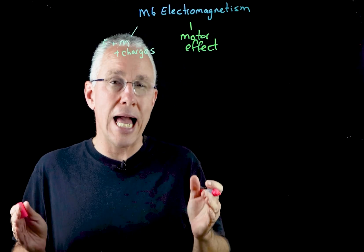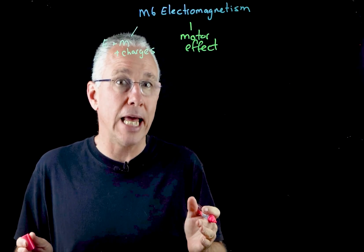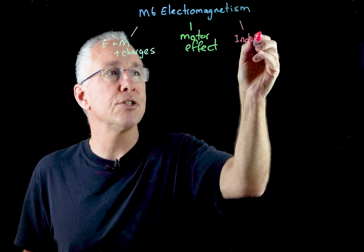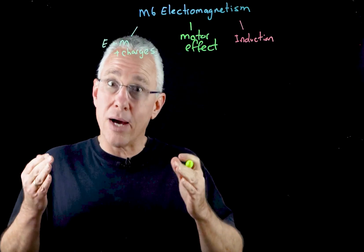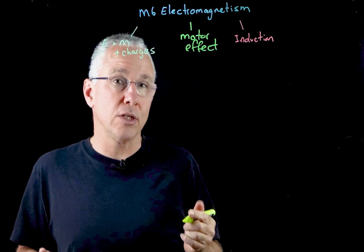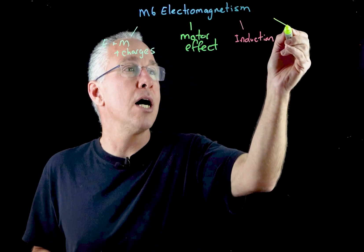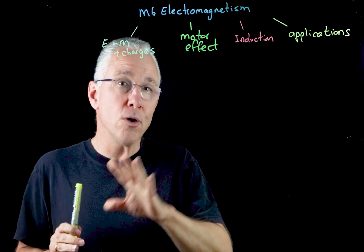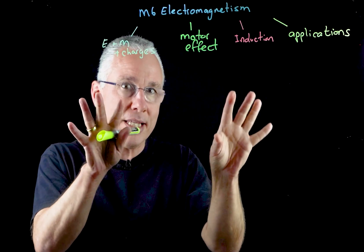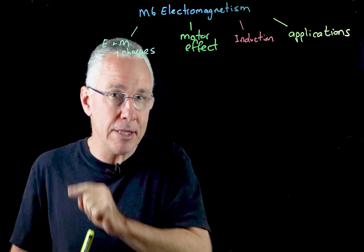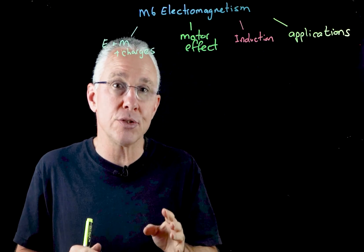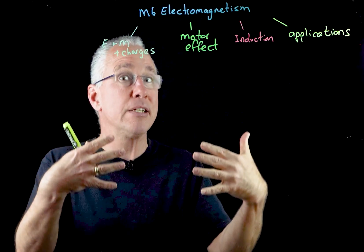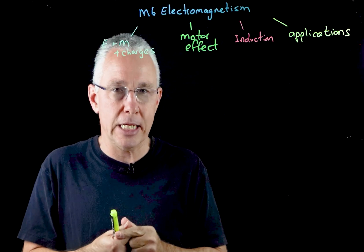The third inquiry question asks how electric and magnetic fields are related, and in essence what we look at is the concept of electromagnetic induction. The final question is how has knowledge of the motor effect been applied to technological advances — in essence, we're talking about applications. Those are our four key inquiry questions, simplified to save space, and everything we develop underneath each one relates to that particular inquiry question.